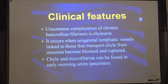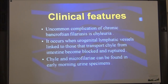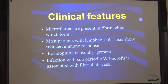An uncommon complication of chronic W. bancrofti filariasis is chyluria — a condition in which chyle is found in the urine. It occurs when urogenital lymphatic vessels linked to those that transport chyle from the intestine become blocked and rupture. Chyle and microfilaria can be found in early morning urine specimens, and the urine appears milky or white in color. Most patients with lymphatic filariasis show reduced immune response; eosinophilia is usually present. Infection with sub-periodic W. bancrofti is associated with filarial abscess.